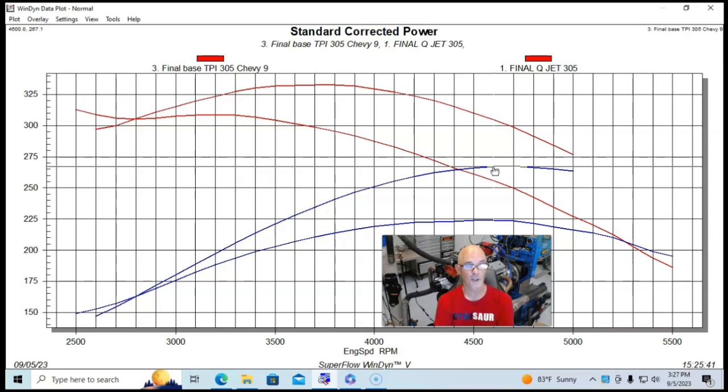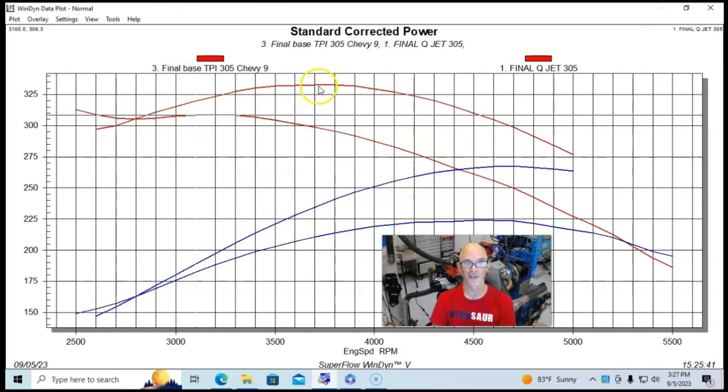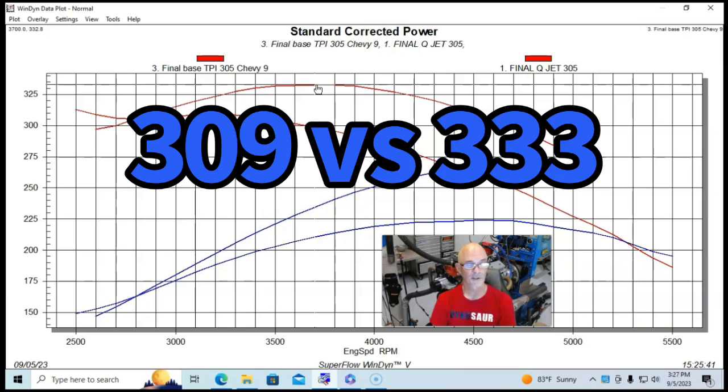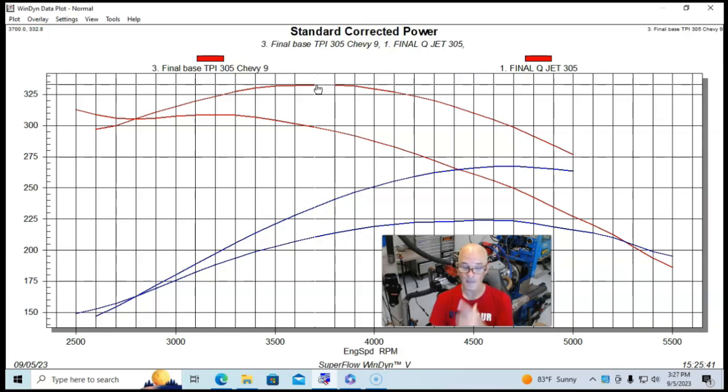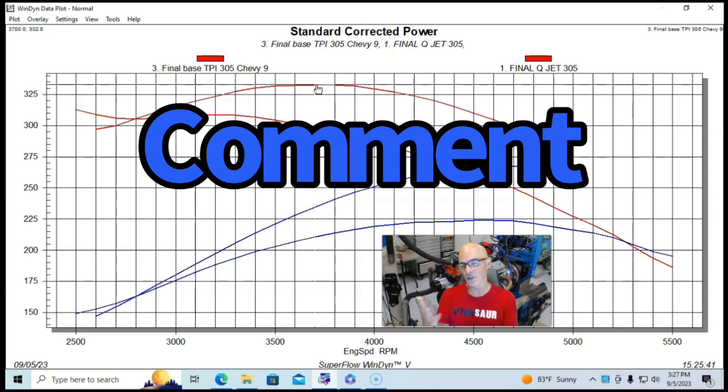225 horsepower, and torque was way down. You can see torque between the two combinations, 308 or 9 foot pounds versus 333 foot pounds. That's a big change in power between the two induction systems. So here you go, let me know, what do you guys think? What caused this difference in power?